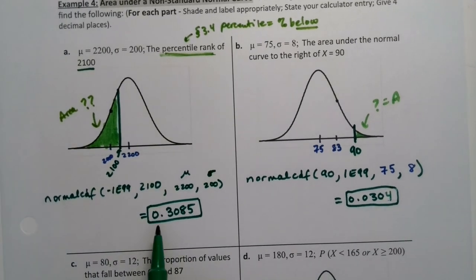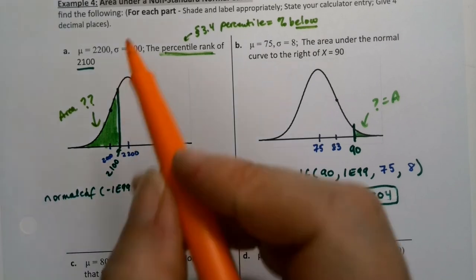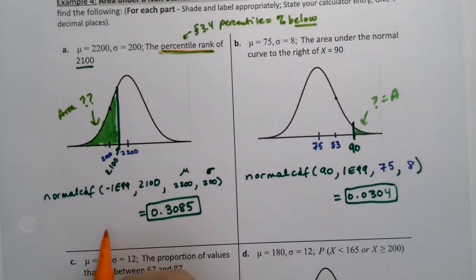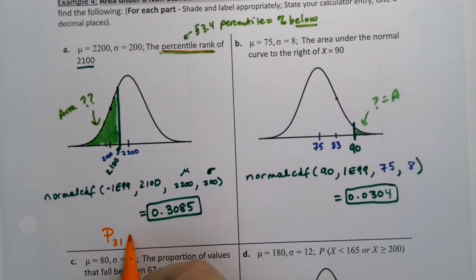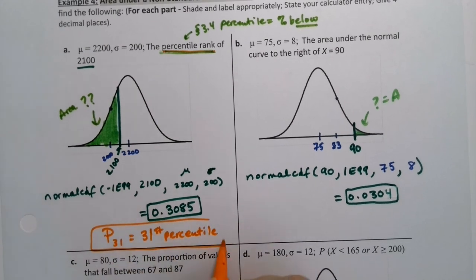And I just realized I messed up just a little bit. They asked for the percentile rank here. That was my fault. Percentile rank we always round. This is P31, the 31st percentile. That's what we should circle here. I forgot about that piece.